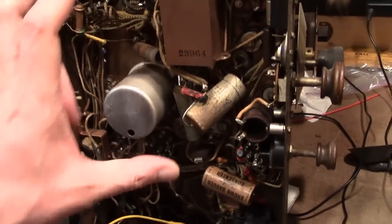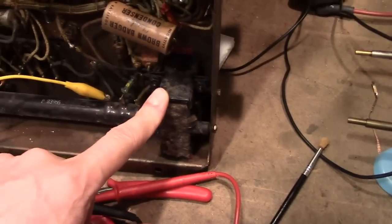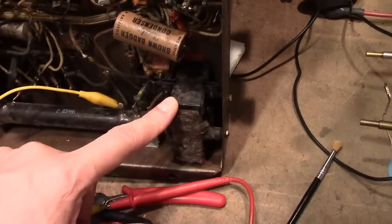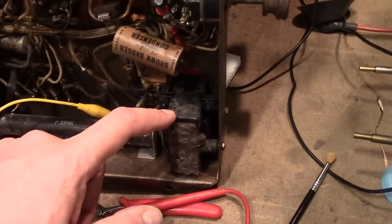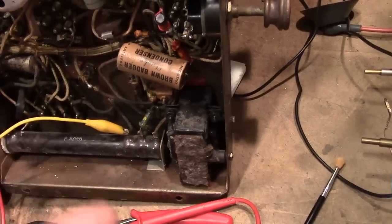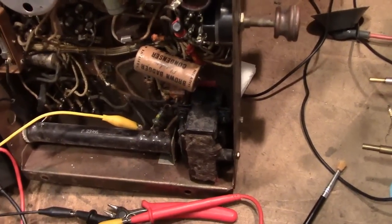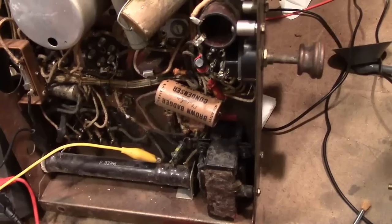Now I want to start checking the other transformers. This is the choke, the power supply choke. I want to check for continuity there. I don't know what the value should be, but typical choke would be like one to two thousand ohms, perhaps less. I'm just thinking about field coils in speakers and they're typically between one and two thousand ohms.